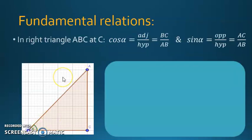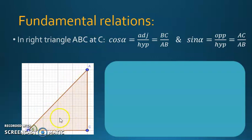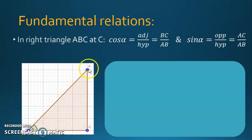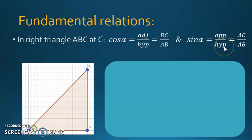Now let's start with the fundamental relations. Consider this right triangle ABC at C, with the angle alpha denoting angle ABC. Cosine alpha is the adjacent side over the hypotenuse, so it's BC over AB. Sine alpha is the opposite side over the hypotenuse, so it's AC over AB.